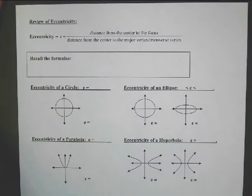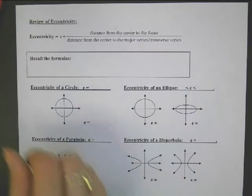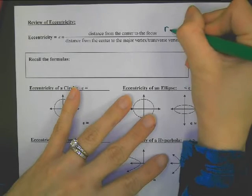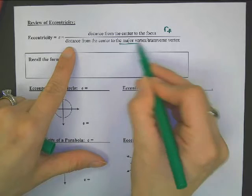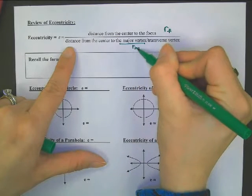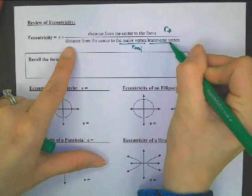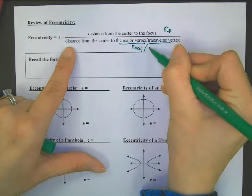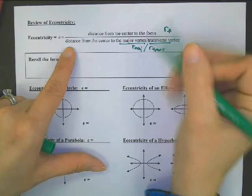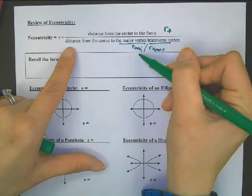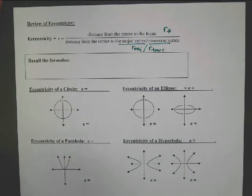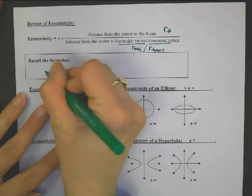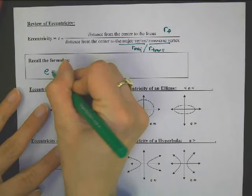Remember, eccentricity — the letter e — is the distance from center to focus, which is r sub f, over the distance from center to major, r major, or the transverse vertex, which is r trans. So if you're talking about an ellipse, you use r major; talking about a hyperbola, it will be r trans. Let's just recall these formulas.